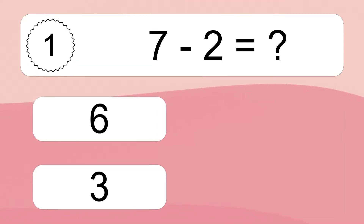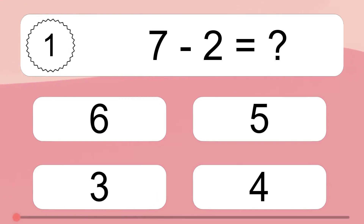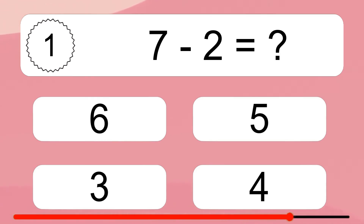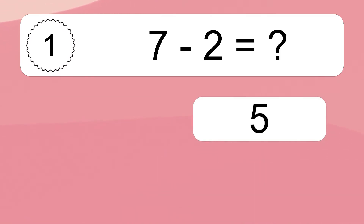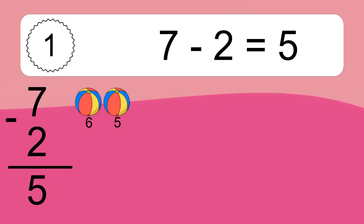7 minus 2 equals what? 7 minus 2 equals 5. Let's count it. 6, 5.